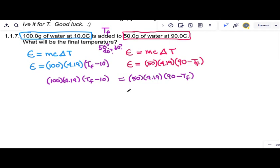Can we simplify this a little bit? One thing we can do right off the bat, both sides of this have 4.19 in them, which is a bit of a messy number. We can divide both sides by 4.19 and they cancel out, which is lovely. So now our equation looks like 100 times T final minus 10 equals 50 times 90 minus T final.